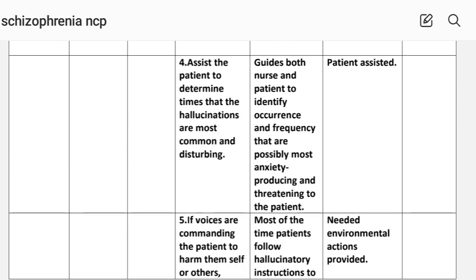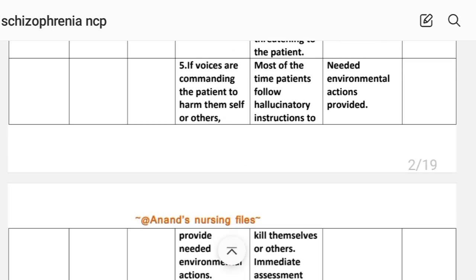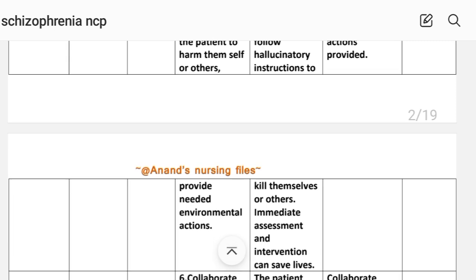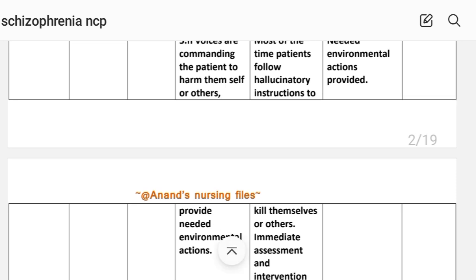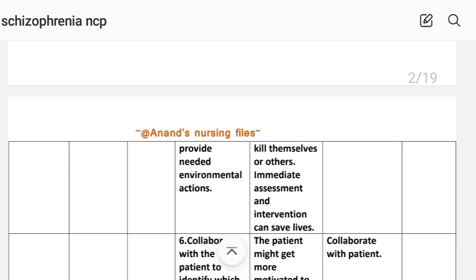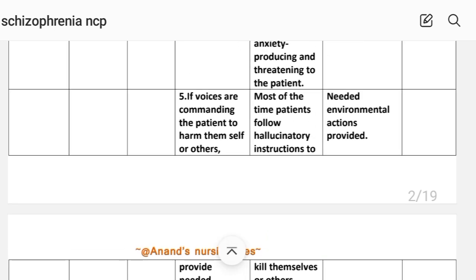Fourth intervention: assess the patient to determine times when hallucinations are most common and disturbing — rationale: guides both nurse and patient to identify occurrence and frequency that are most anxiety-producing and threatening; implementation: patient assisted. Fifth intervention: if the voices are commanding the patient to harm themselves or others, provide needed environmental actions — rationale: most of the time patients follow hallucinatory instructions to harm themselves or others; immediate assessment and intervention can save lives; implementation: needed environmental actions provided.